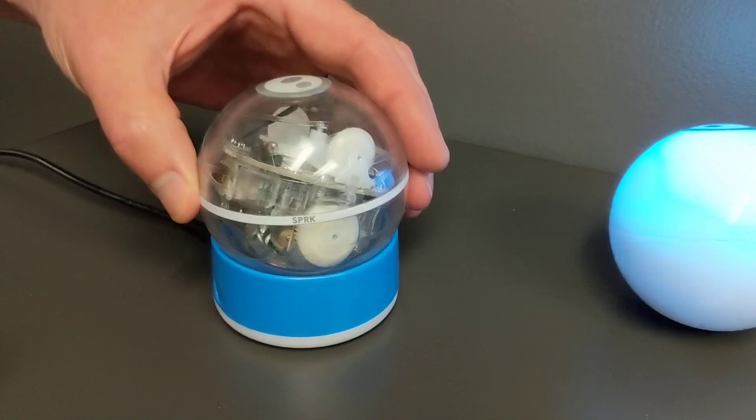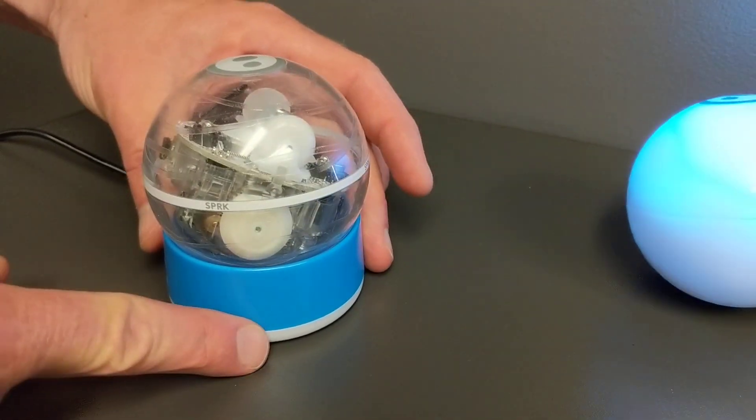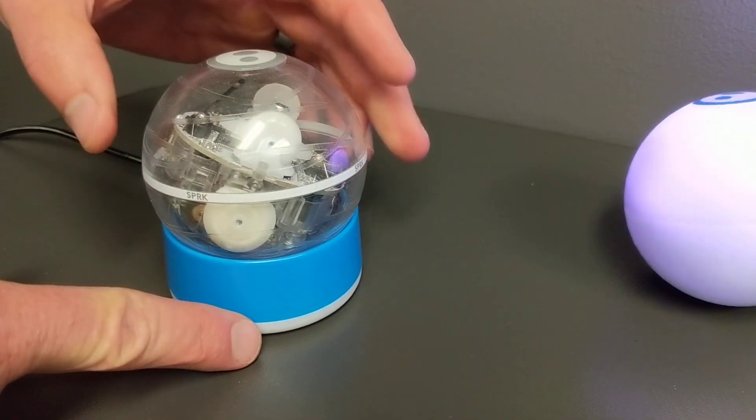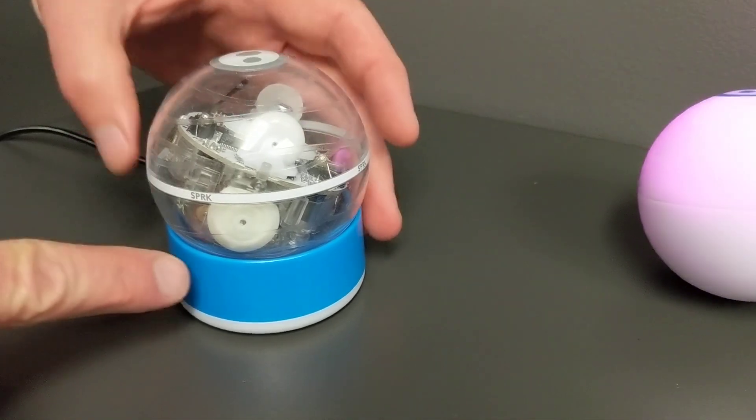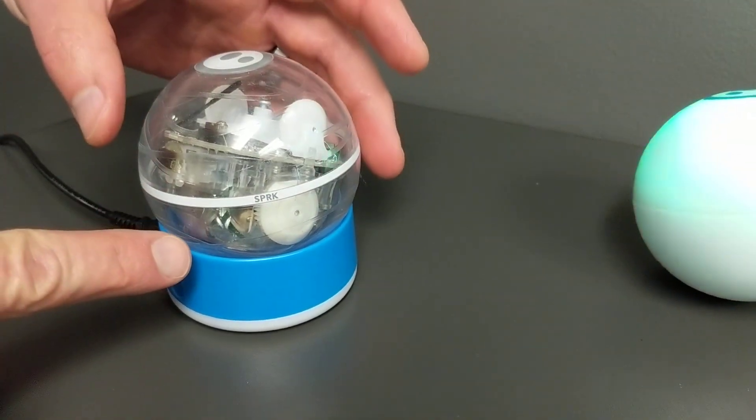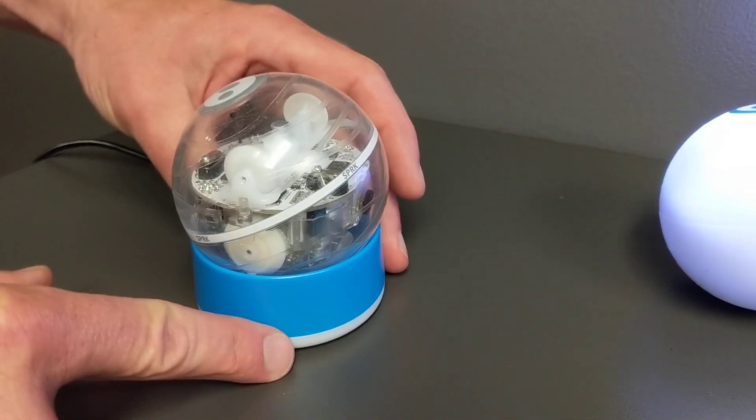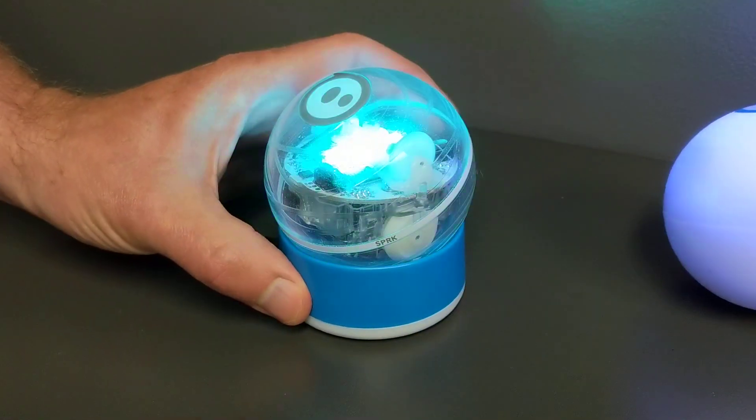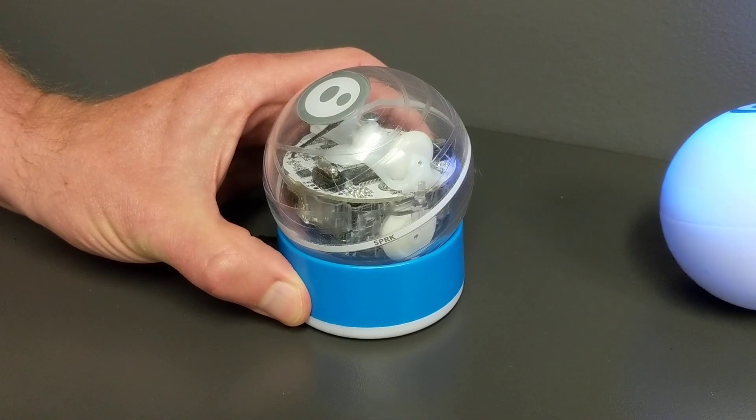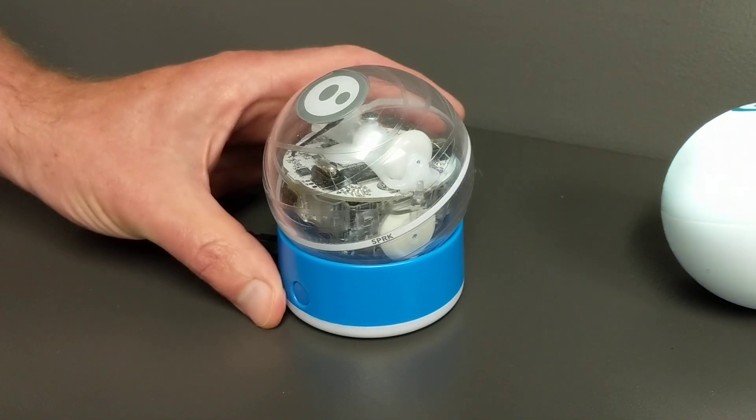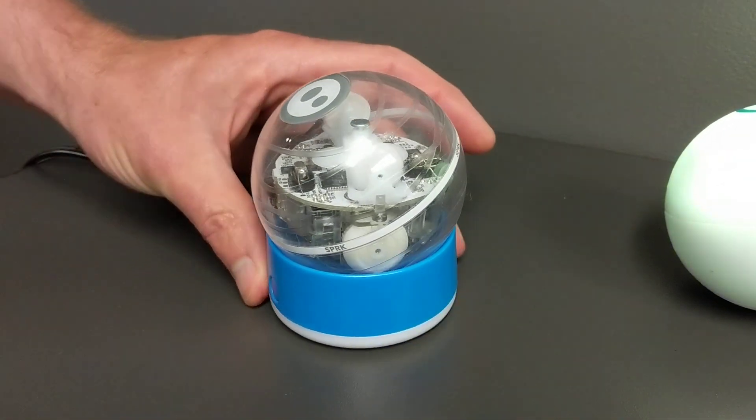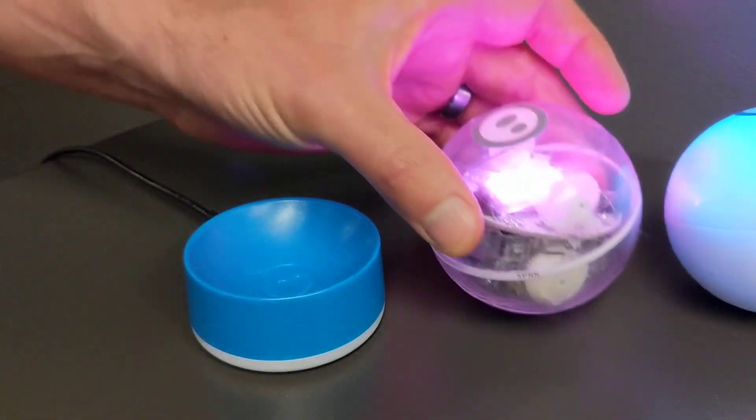And then with the Spark, do the same thing, make sure that the blue light starts flashing. Notice it's not flashing, because my robot, if you look closely, is not on the base properly. I'm going to pick it up, place it back on the base properly, blue light's flashing, press the reset button, and then let go, and my Sphero has reset.